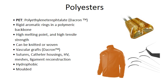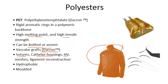Polyesters are the next family. We're familiar with polyester clothing, and those properties transfer well to medical devices. Polyesters can be knitted or woven, have a high melting point, and high tensile strength. Dacron is a trade-name polyester used in vascular grafts — it offers great flexibility, can be woven, and is very well tolerated by the body. It's also used in sutures, catheter housings, heart valves, meshes, and ligament reconstruction. Polyesters are hydrophobic, good for deterring proteins, and can be molded.